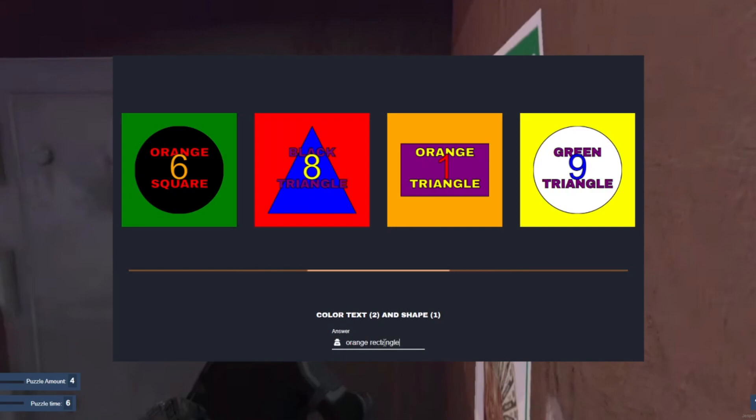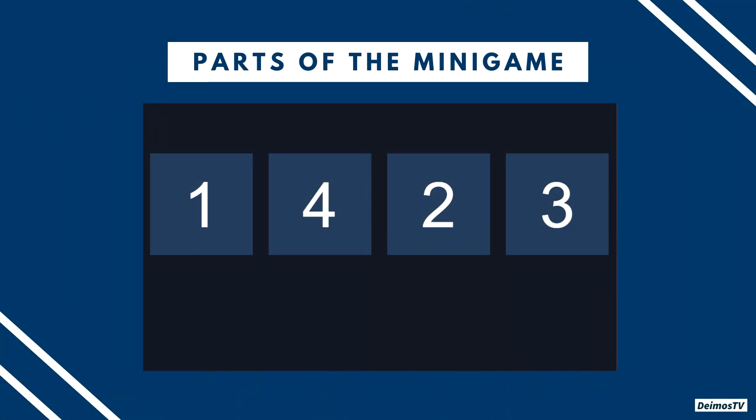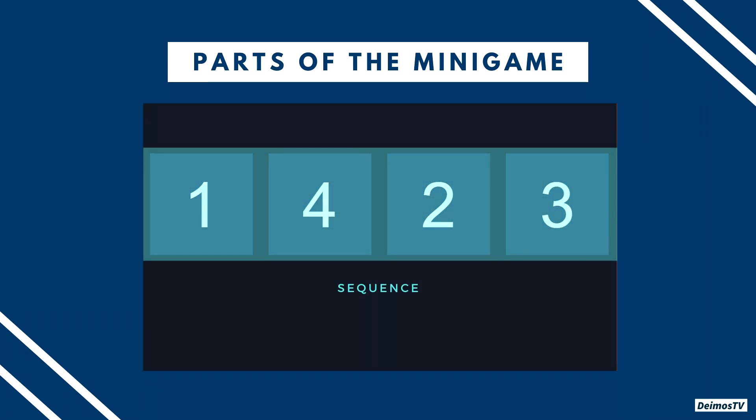So let's talk about the mechanics of this minigame. There are basically just 4 things that you need to know. First is the sequence — it is the first set of numbers that would appear upon starting the minigame. This is the only thing that you need to memorize.